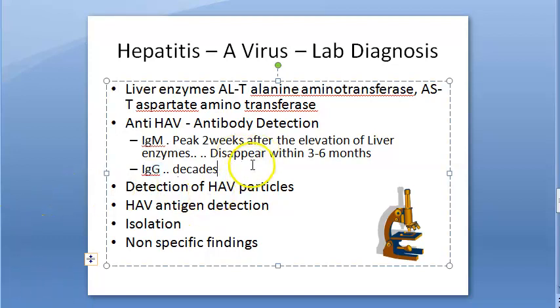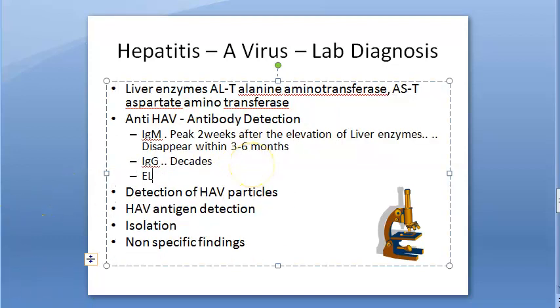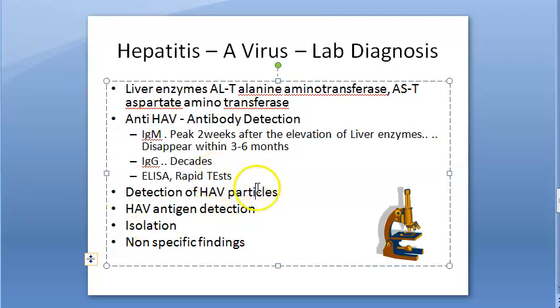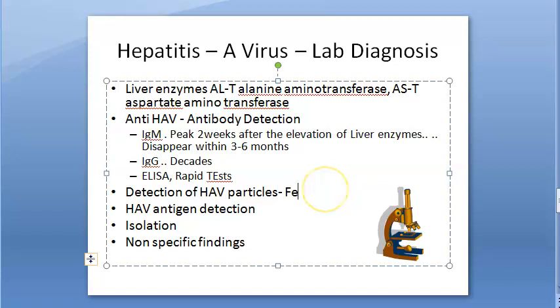These antibodies are detected using ELISA, which is the method of choice. However, many rapid test formats are also available. For detection of HAV particles — which is more like antigen detection — HAV appears in the stool because this is a fecal-oral transmission.